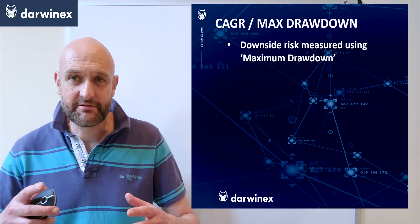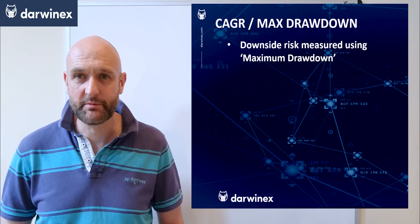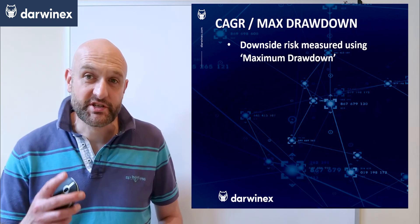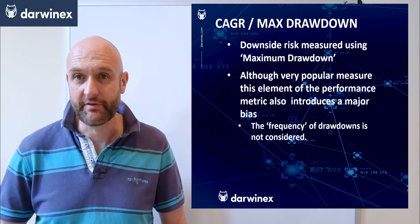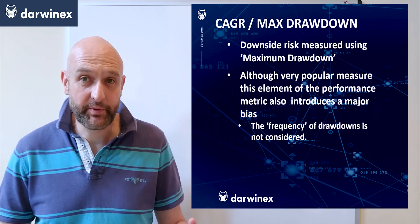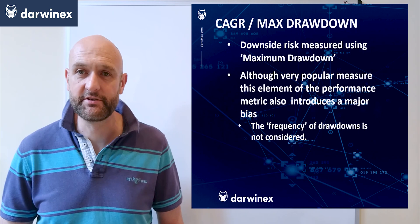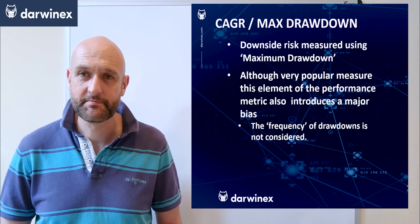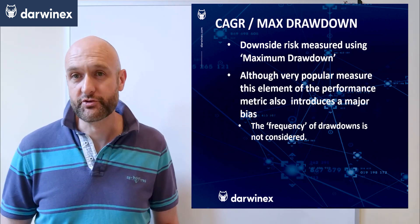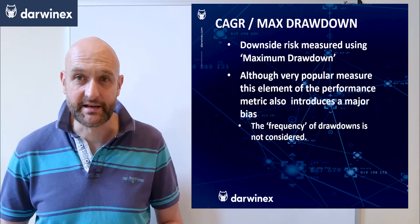In terms of the downside risk element, we're using the maximum drawdown, which is a percentage not an absolute value. Although this metric is very popular and used by many people, it does introduce yet another bias — in relation to the frequency of drawdowns experienced throughout the backtest.